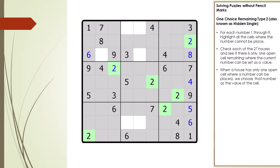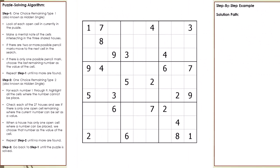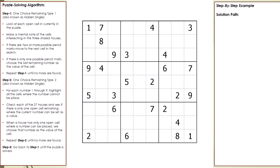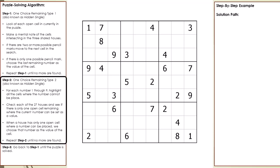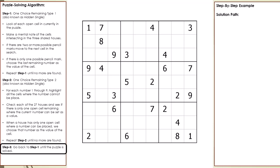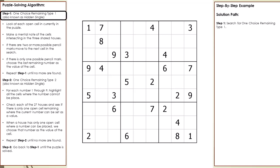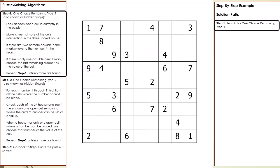Next I am going to solve a puzzle step by step from beginning to end. The algorithm we will use: search for One Choice Remaining Type 1 until we can't find any more, then search for One Choice Remaining Type 2 until we can't find any more, then repeat steps 1 and 2 until the puzzle is solved. From this point I am going to say OCR instead of One Choice Remaining.